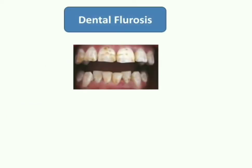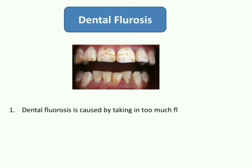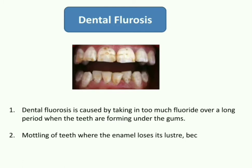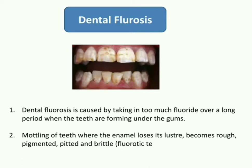Dental fluorosis. As you can see, these teeth have a mottled appearance indicative of fluorosis. Dental fluorosis is caused by taking in too much fluoride over a long period when the teeth are forming under the gums. Mottling of teeth occurs where the enamel loses its luster, becomes rough, pigmented, pitted, and brittle. Later the teeth become hard and brittle. These are the features of dental fluorosis.